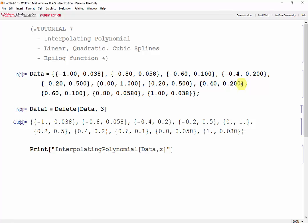So we can use this function and store it in a variable y. So let's say y is equal to the interpolating polynomial of the data with respect to x.